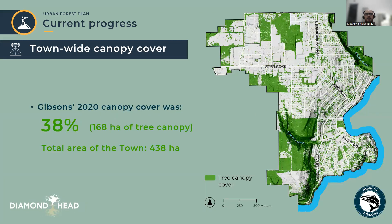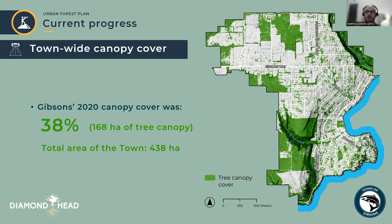So what is the town's canopy cover? Within the town boundary in 2020, Gibsons' canopy cover was 38% — 38% of the land base was covered by tree crowns, representing 168 hectares within the town's total area of 438 hectares. Canopy cover is prevalent in natural areas such as around Gibsons Creek and Charmin Creek, in rural areas towards the northwest of the town, and more scattered in the urban areas, as you might expect.